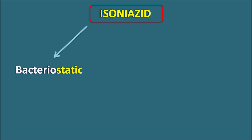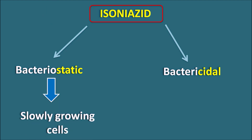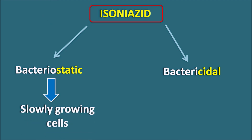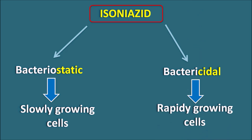How does Isoniazid act in mycobacterium tuberculosis? This drug can act as a bacteriostatic — it can inhibit the growth of the mycobacteria. Otherwise it can also act as bactericidal — it can kill the mycobacteria. Whether it is bacteriostatic or bactericidal depends on the type of cells on which the drug acts. It shows bacteriostatic action on slowly growing mycobacterial cells, while bactericidal action is observed on fast growing mycobacterial cells.